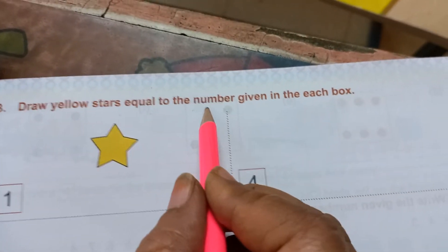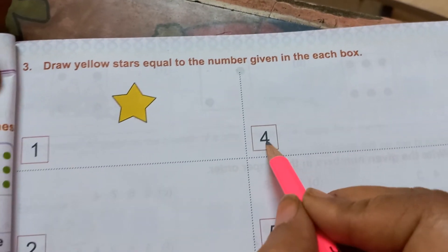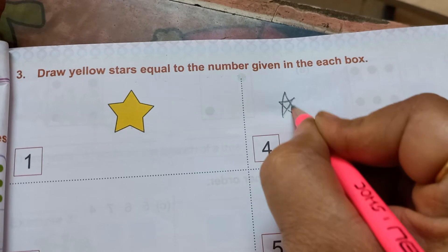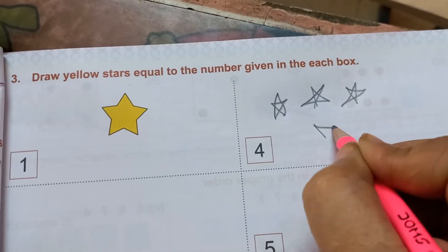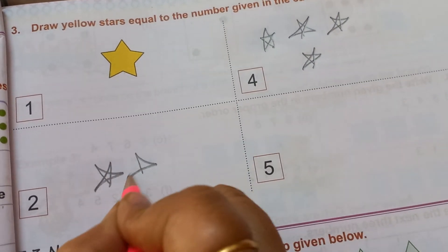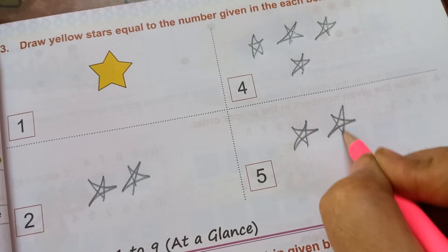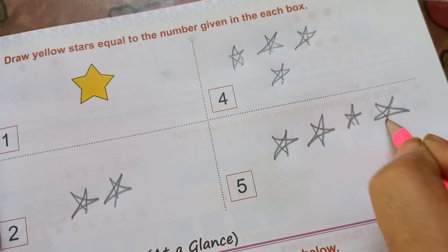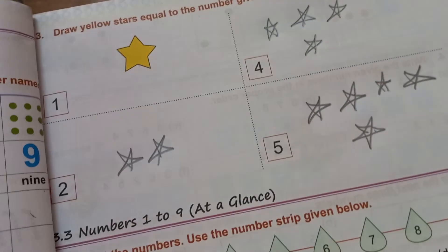Draw yellow star equal to the number given. Here is 1 star. So here 4. So how many stars you have to draw? 4 stars. One, 2, 3 and 4. Here 2. So you have to draw 2 stars. And here 5. So you have to draw 5 stars. Like this you have to solve this exercise on your book.